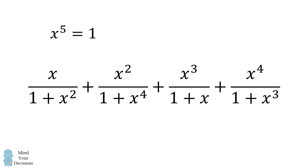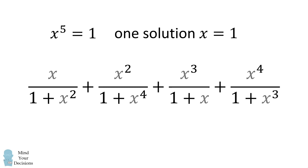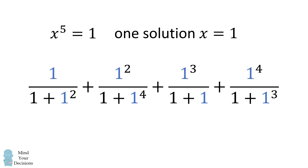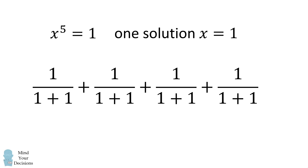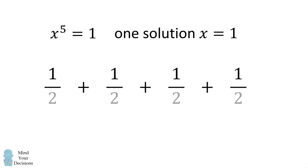We can get started by guessing a solution to this equation. If x to the power of 5 is equal to 1, then one value that satisfies this equation is x is equal to 1. We can substitute this value and then simplify each fraction. All four fractions become the same value of 1 over 2, so the sum of these fractions will be equal to 2.